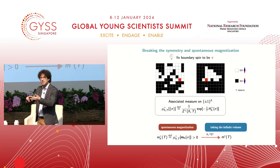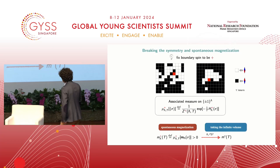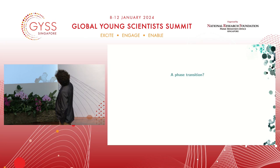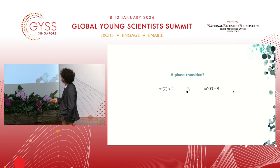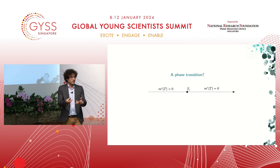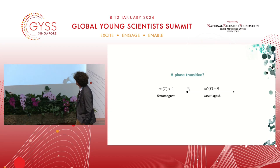That was the cooking up of the model: defining the object, introducing randomness, breaking symmetry, and taking the infinite limit — typical steps when introducing a model. Now the question is what we do with it. We want to understand if we can see what happens in the experiment — the loss of magnetization. Is there a critical temperature below which the spontaneous magnetization is strictly positive? If so, it's a ferromagnetic phase; if zero, it's a paramagnetic phase.